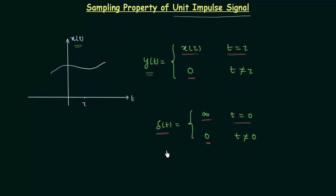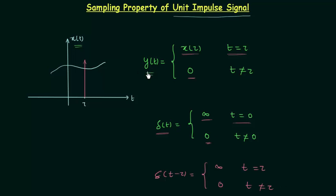In our case, time t is equal to tau, so we need the impulse at that time. For this, we will perform time shifting: delta(t minus tau), which gives infinity when t is equal to tau and zero when t is not equal to tau. So we multiply signal xt with the unit impulse signal delta(t minus tau). Note that delta(t minus tau) is equal to zero when t is not equal to tau.